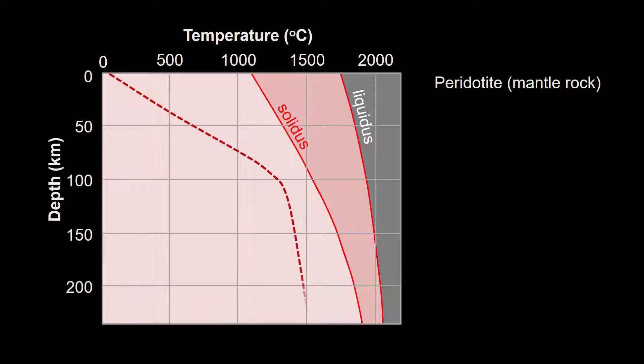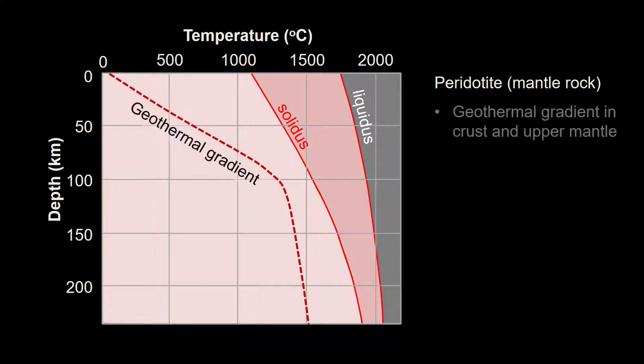Let's add another curve. This one indicates a typical geothermal gradient for the crust and mantle. This is the temperature of rocks at any given depth. For example, a rock at 100 kilometers would lie near the top of the asthenosphere below oceanic basins and it would be solid under around 1300 degrees Celsius in temperature.